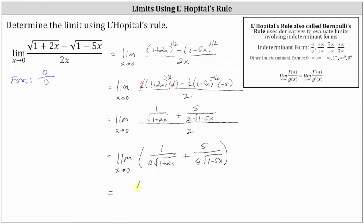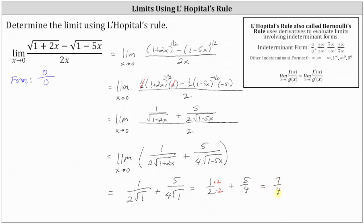Now we can determine the limit by performing direct substitution. The limit equals one divided by two times the square root of one, plus five divided by four times the square root of one. Simplifying, we have one half plus five fourths. Obtaining a common denominator of four, we have two fourths plus five fourths, which equals seven fourths. So applying L'Hôpital's rule, the limit is equal to seven fourths.